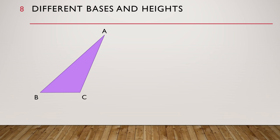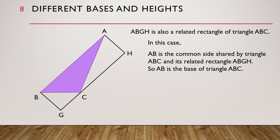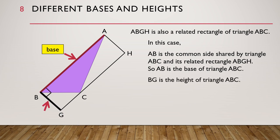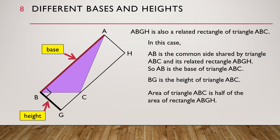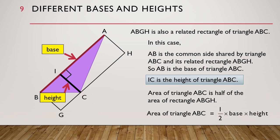Let's look at triangle ABC by itself. We can draw another related rectangle of triangle ABC. This rectangle ABGH is also a related rectangle of triangle ABC. In this case, AB is the common side shared by triangle ABC and its related rectangle ABGH. So AB is the base of triangle ABC, and BG would be the height of triangle ABC. The area of triangle ABC is half of the area of rectangle ABGH, so the area of triangle ABC is equal to half times base times height. Sometimes the height may not be shown like this — it may be shown as this line instead. So IC is also the height of triangle ABC, and we can use IC to find the area.